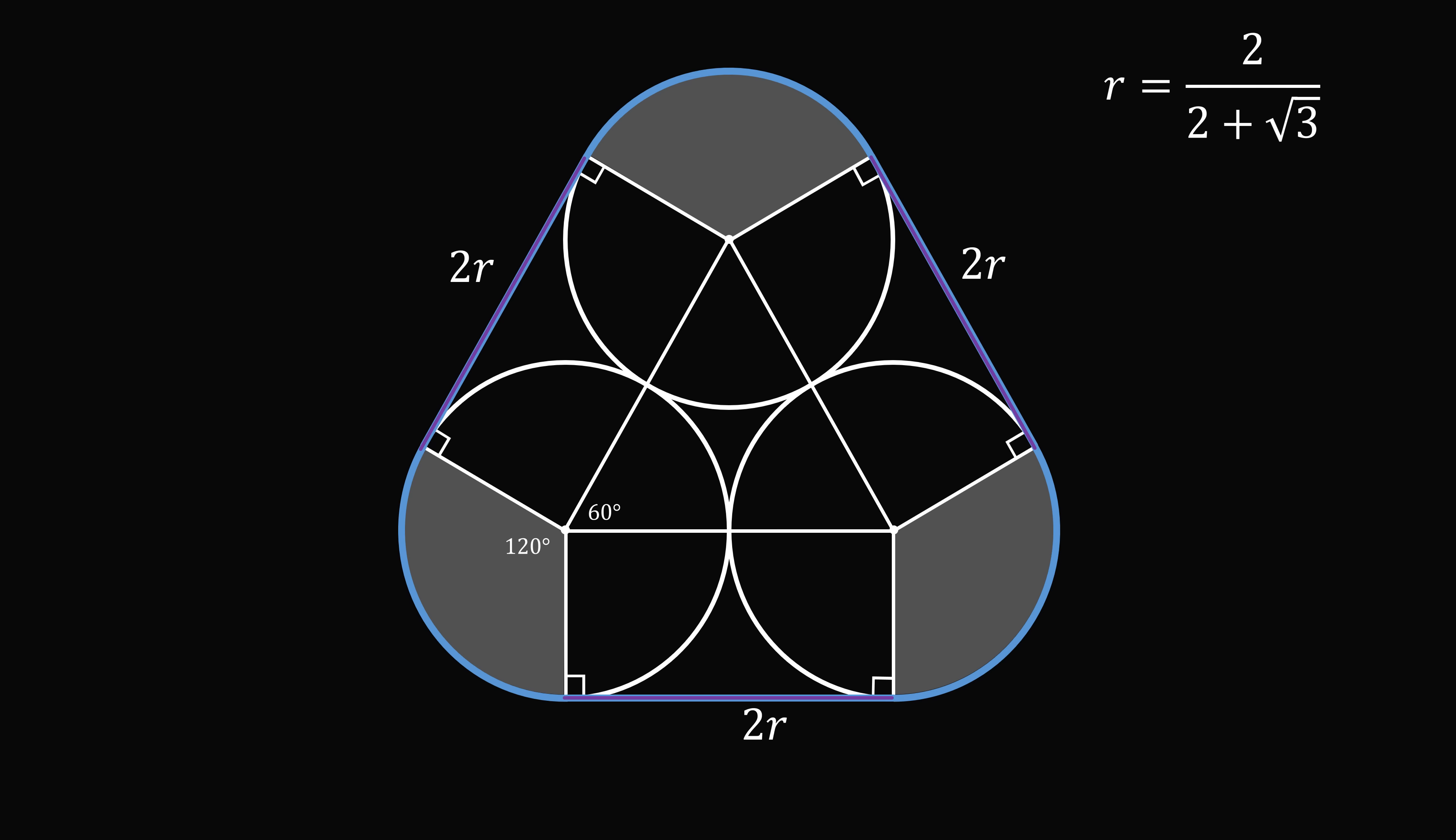So the length of each of these circular arcs will be one-third of the entire circle because we have a central angle of 120 degrees, which is one-third of 360 degrees. So each of these circular arcs will be one-third of the circumference, which will be one-third of 2πr. So we'll have the same length for all three of these.